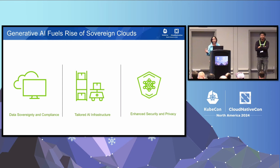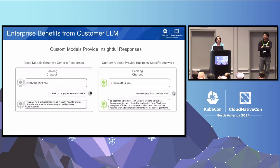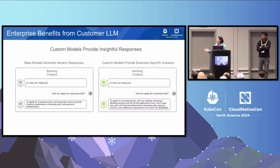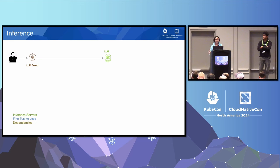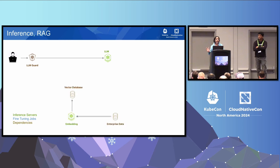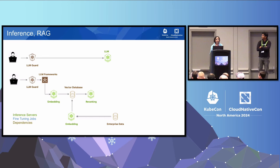Generative AI is giving rise to sovereign clouds because customers want data sovereignty, security, and privacy. Most enterprises really want to customize because they want to provide business-specific answers. A simplistic inference pipeline would have a large language model front-ended with a guardrail. For a RAG pipeline, you would have enterprise data, use an embedding model to index data using a vector database, then in response to a customer query, use an LLM framework such as LangChain, use an embedding model to retrieve relevant chunks, re-rank it, combine it with the query, and provide the response.